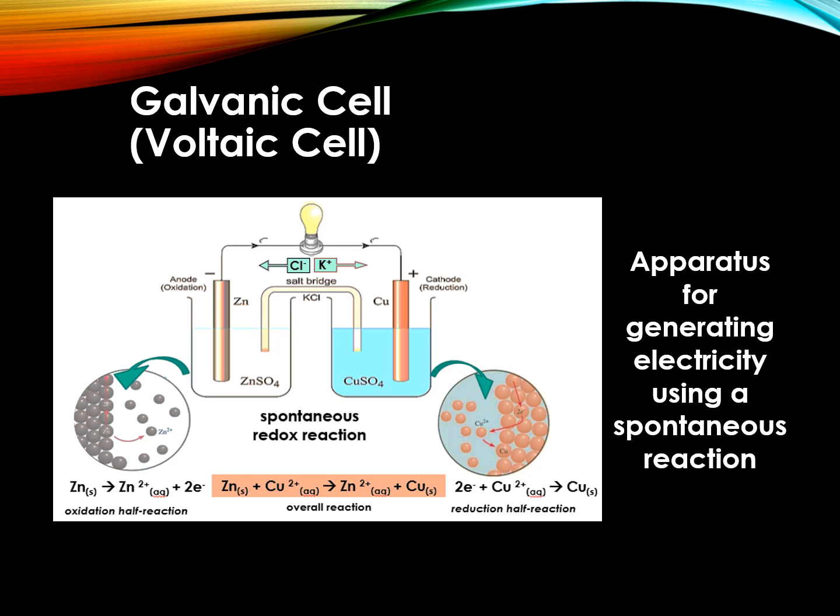In separate electrode compartments, zinc is oxidized to zinc ions Zn2+, while copper ions Cu2+ is reduced to copper. These reactions take place simultaneously with the transfer of electrons between them occurring through a conducting medium, an external wire otherwise known as the salt bridge.